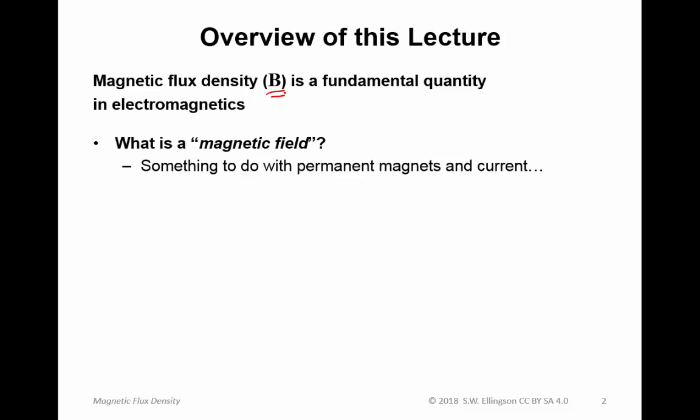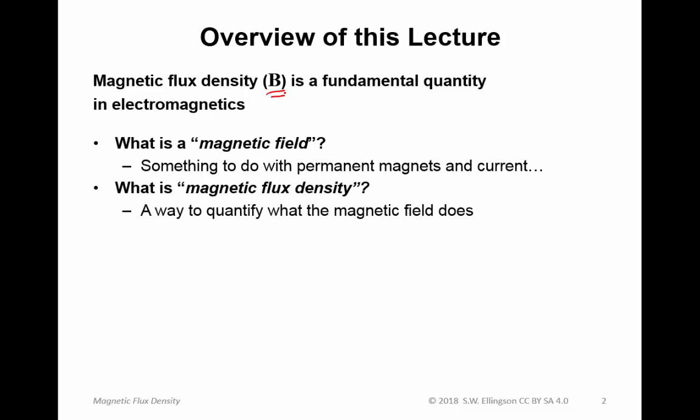Here's an overview of this lecture. First, we're going to talk about what it means to be a magnetic field — it has something to do with permanent magnets and perhaps also with current. Then we'll talk specifically about magnetic flux density, which is simply one way to quantify the magnetic field, analogous to how electric field intensity quantifies the electric field. Finally, we'll talk about permeability, which is analogous to permittivity for electric fields and describes how materials influence the magnetic field.